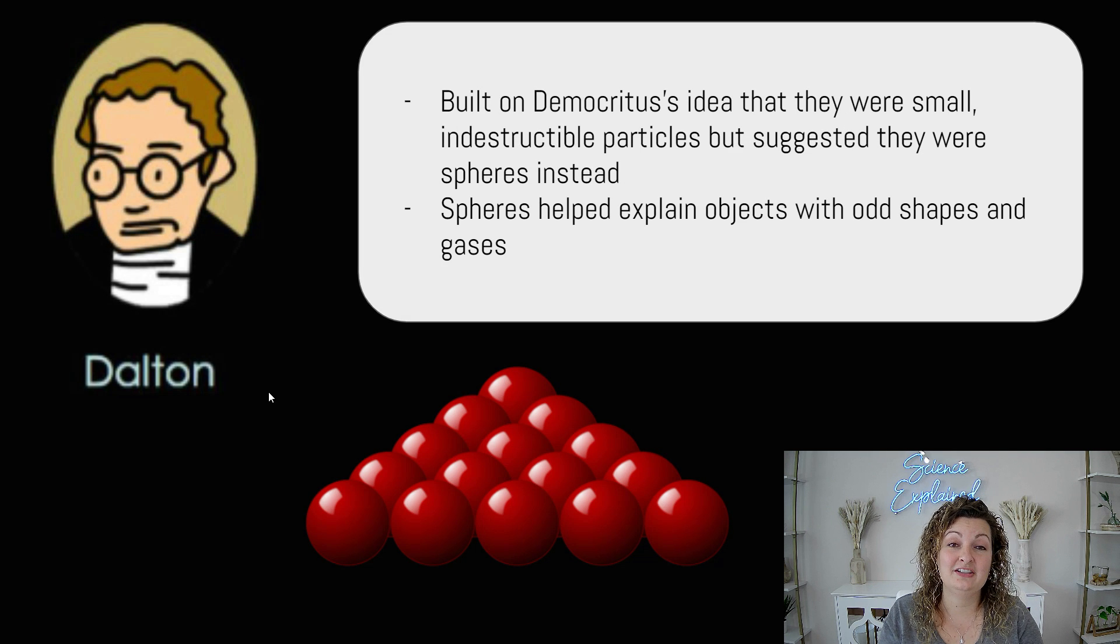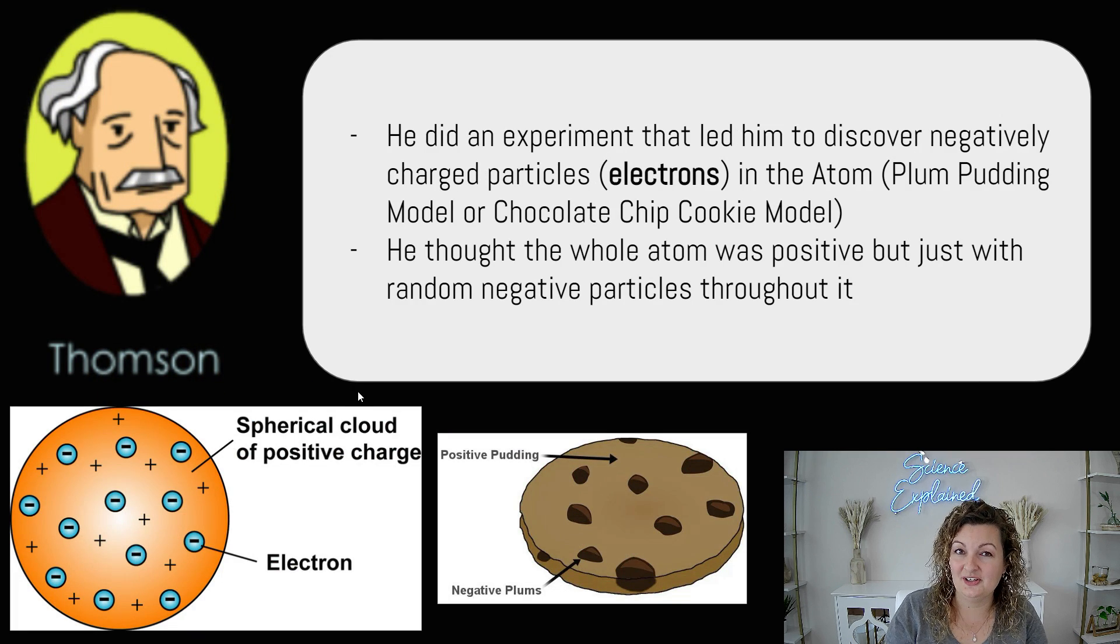So Dalton was the next scientist to kind of step up and say, hey, you know what? I think he was onto something, but I think they were in the shape of a sphere instead. That would explain why things have curved edges and that would explain why we have gases and things like that. But that didn't stick forever, right?